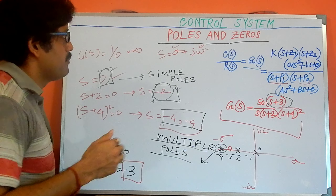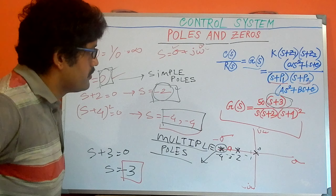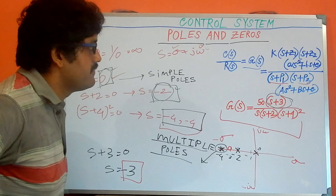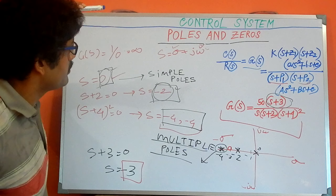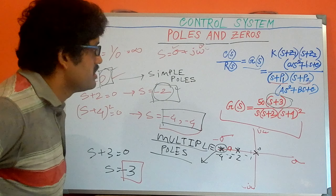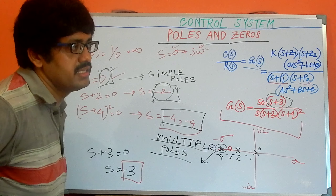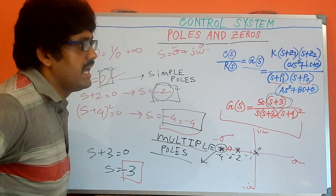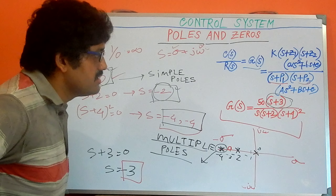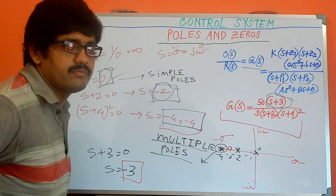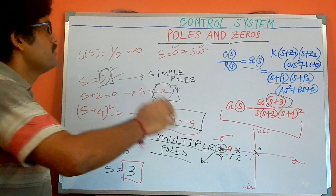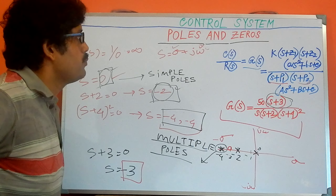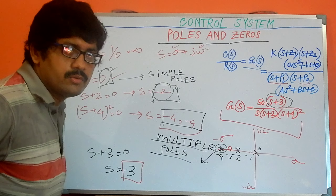So this is all about poles and zeros of our control system. Hope you understood the concept about poles and zeros. If you don't understand, please let me know in the comment section below, like the video, and please subscribe to the channel.